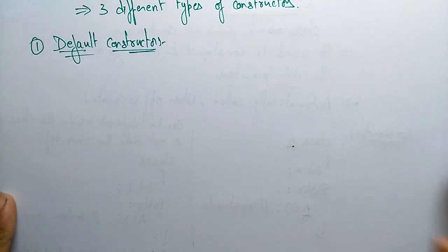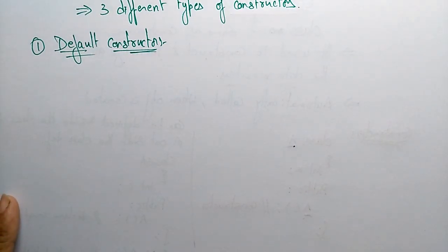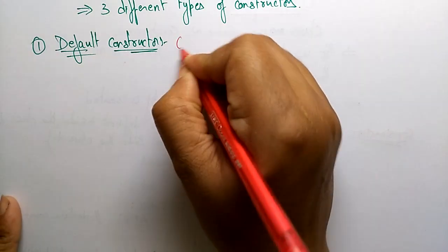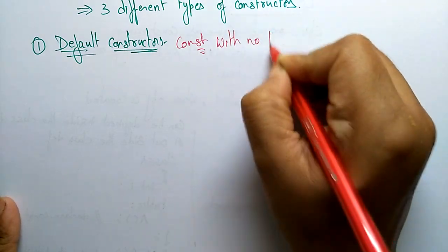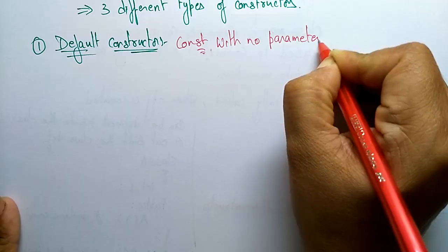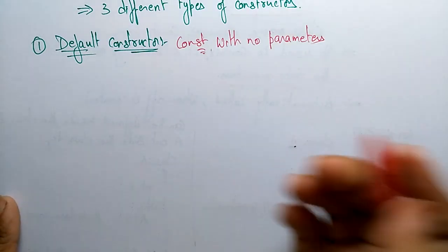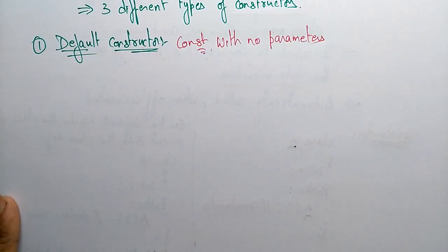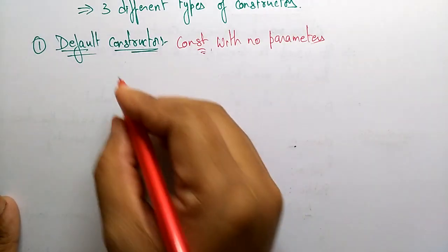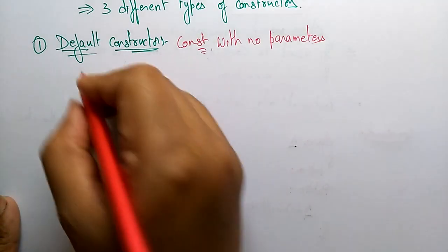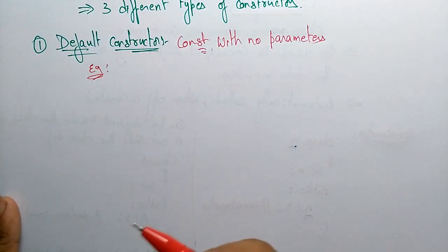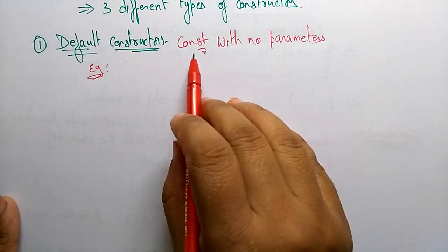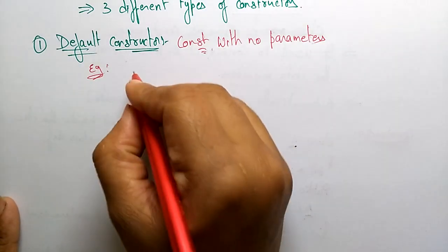The first type is the default constructor. A default constructor is a constructor with no parameters. We call it a default constructor because no parameters are passed. Let us see an example to understand what a default constructor is.